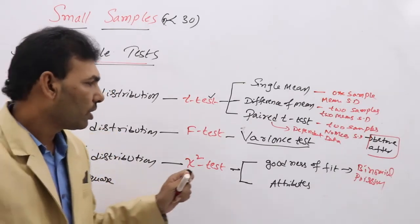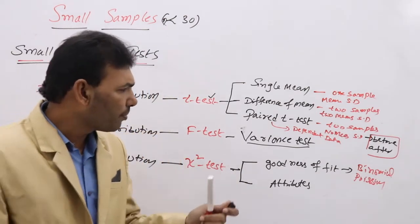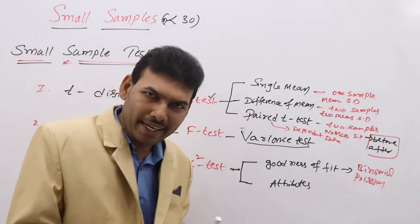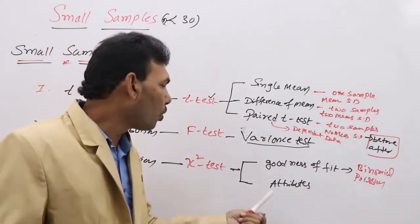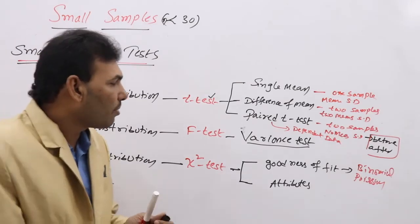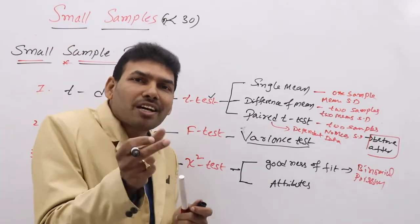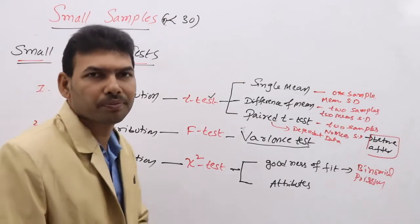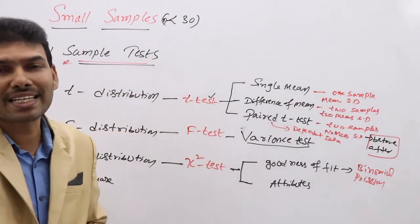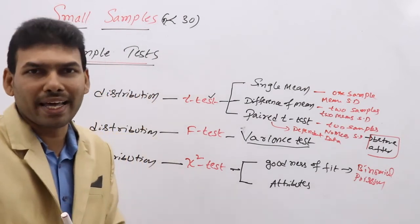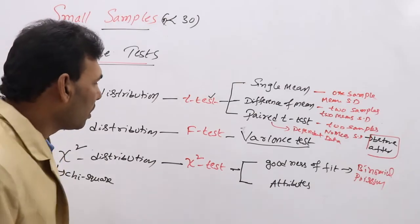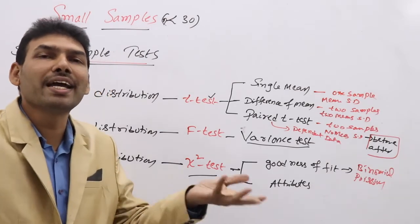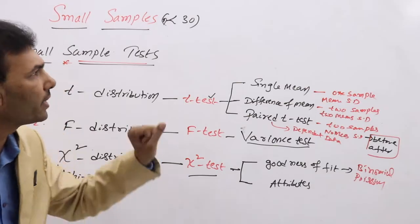Coming to attributes: an attribute simply means a character or behavior. When discussing hair color, eye color, or some quality like goodness or badness — these come under chi-square test for independence of attributes. Based on these techniques, one can easily identify which test to apply. That is the most important skill in small samples — identifying the suitable test among the 6 available.